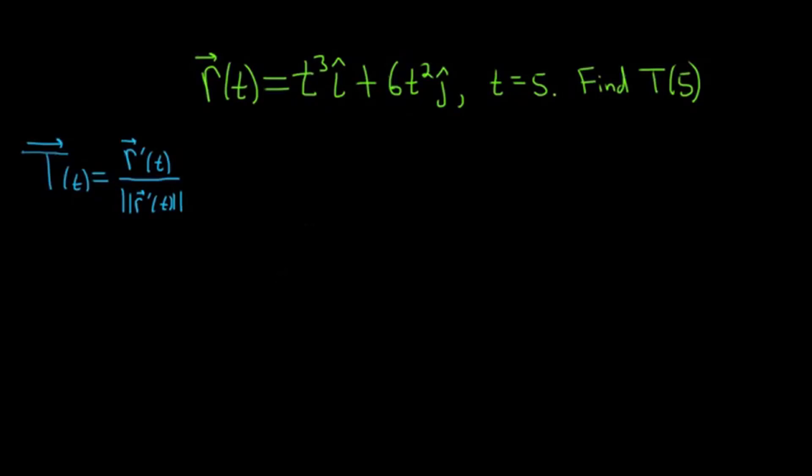In this problem, we're going to find the unit tangent vector given this vector-valued function, and we're going to evaluate it at t equals 5. So this is the formula for the unit tangent vector. All we have to do is use the formula.